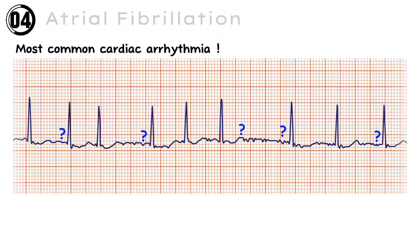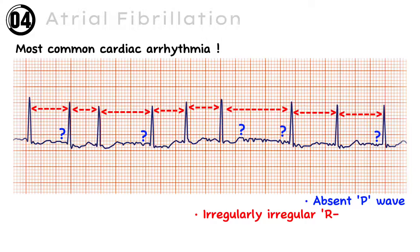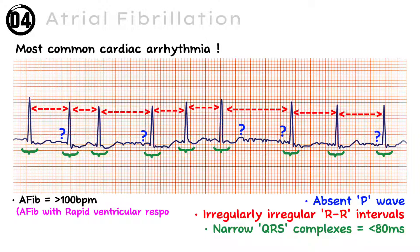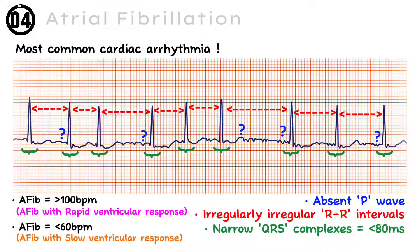In atrial fibrillation, there is no clear P wave — or absent P wave — due to atrial twitching, and the RR intervals are irregularly irregular due to the multiple irregular impulses from the atria. There are also narrow QRS complexes, less than 80 milliseconds. Atrial fibrillation with more than 100 beats per minute is called atrial fibrillation with rapid ventricular response, and less than 60 beats per minute is called atrial fibrillation with slow ventricular response.